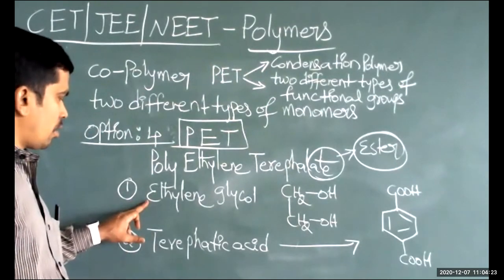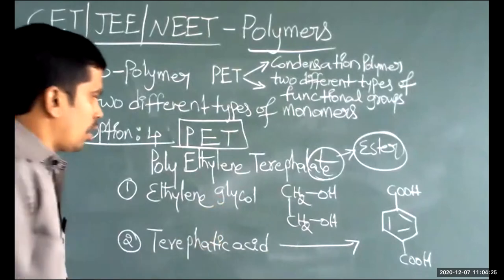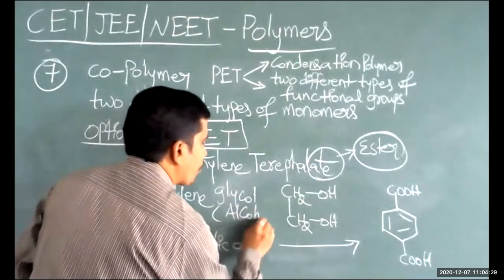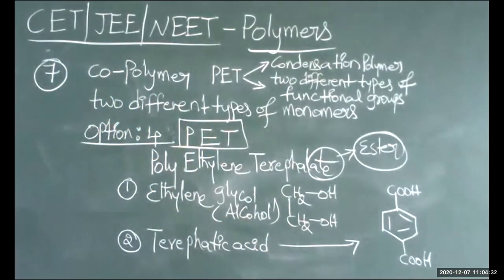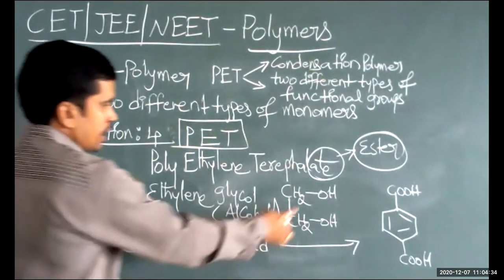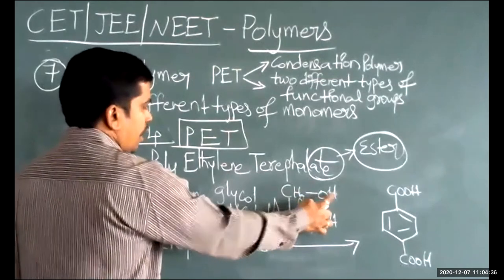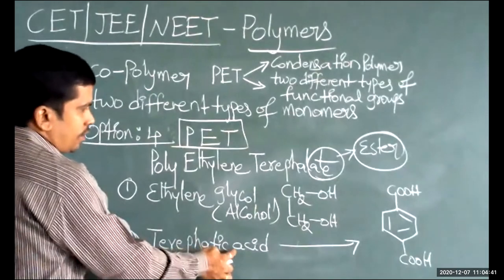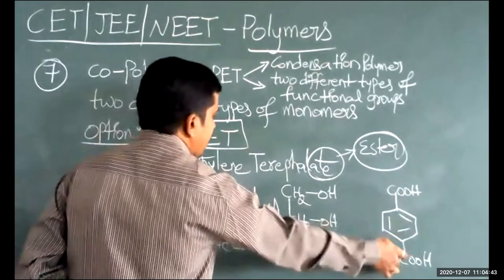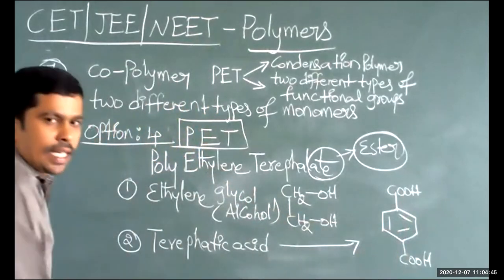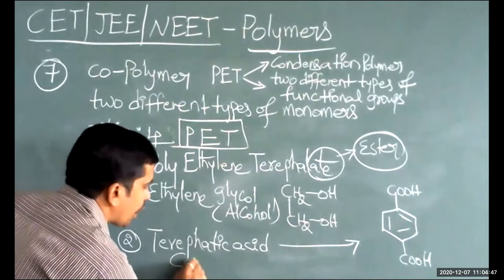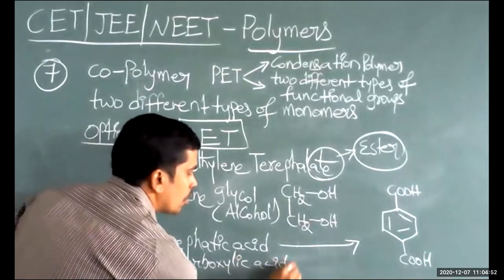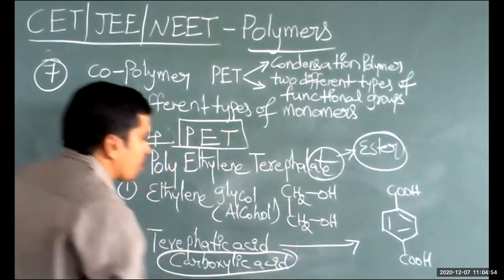The first monomer, ethylene glycol, contains an alcohol functional group (-OH). The second monomer, terephthalic acid, contains carboxylic acid functional groups (-COOH).